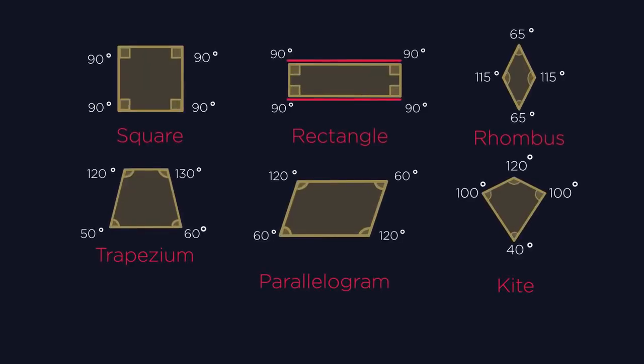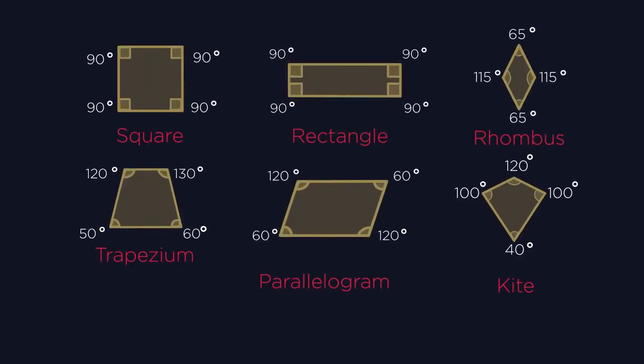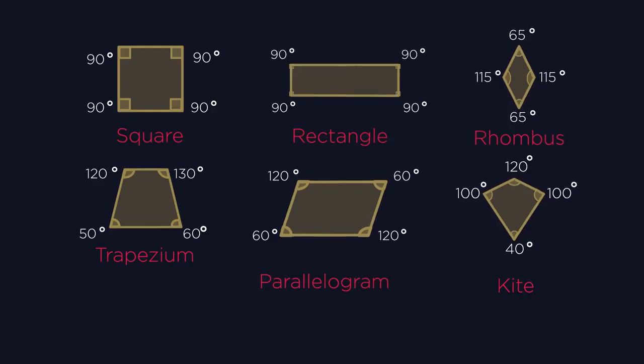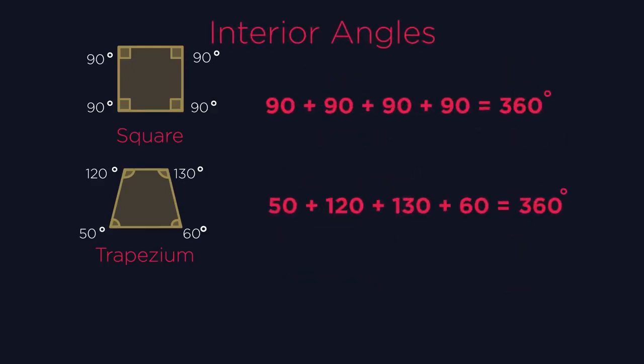So they all have four sides, they all have four angles, they all have four vertices or corners. What about the sum of the interior angles? The interior angles always add up to 360 degrees.